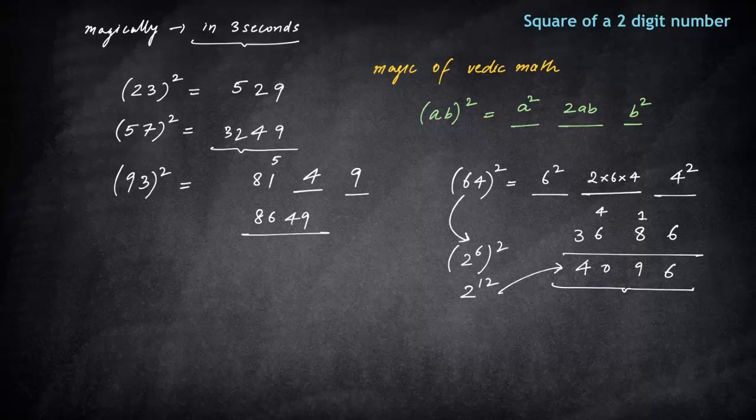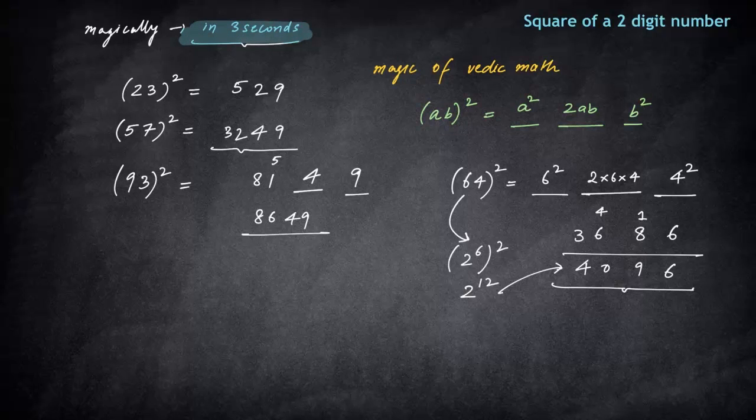So I hope you have enjoyed this process of finding square of any two digit number under 3 seconds. So I hope now you will be able to solve on your own under 3 seconds. Do subscribe to our channel for these interesting kind of videos where we not just concentrate on making maths easy for you but interesting as well. God bless you all.